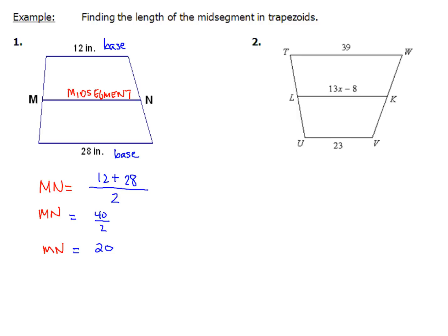Now let's take a look at example number two. Now here, our mid-segment is the LK piece, and my bases are TW at the top and UV at the bottom. So when I set that up, same kind of idea again. I'm just going to take my time and write down each one of those pieces. So the LK, my mid-segment, that part is represented by 13x minus 8, and that's going to be equal to half of 39 plus 23. And I divide that by 2.